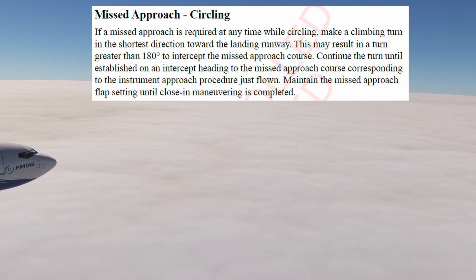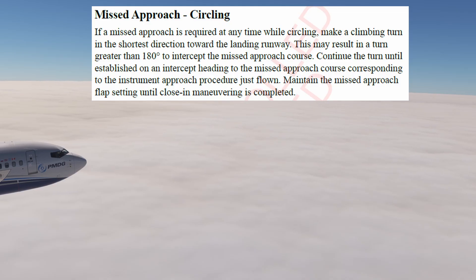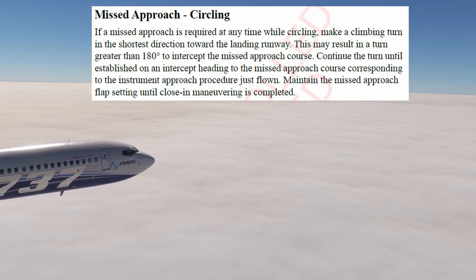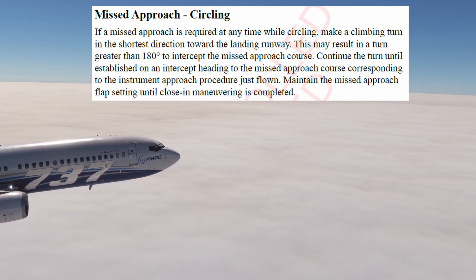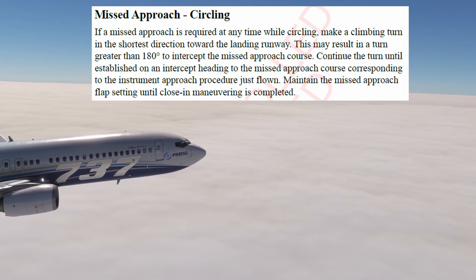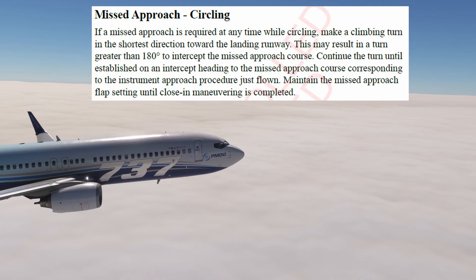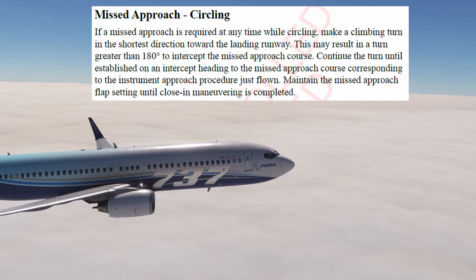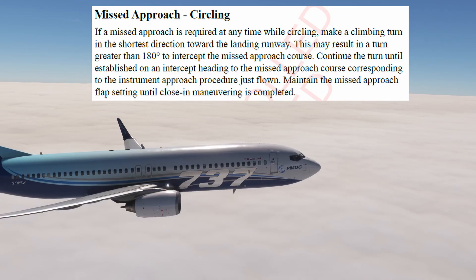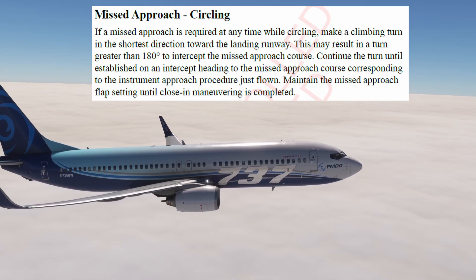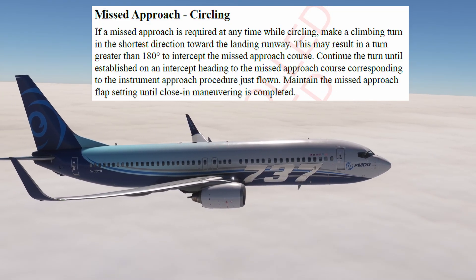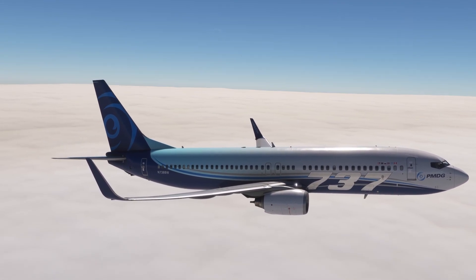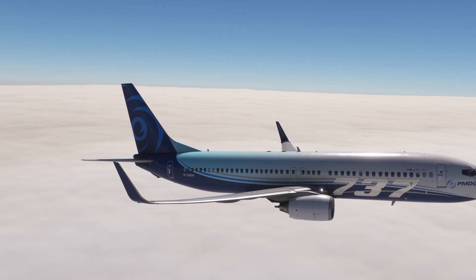If a missed approach is required at any time while circling, make a climbing turn in the shortest direction toward the landing runway. This may result in a turn greater than 180 degrees to intercept the missed approach course. Continue the turn until established on an intercept heading to the missed approach course corresponding to the instrument approach procedure just flown. Maintain the missed approach flap setting until close-in maneuvering is completed. More information can be found in the FCTM.